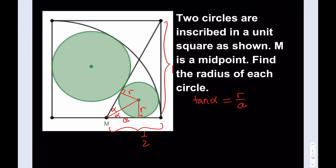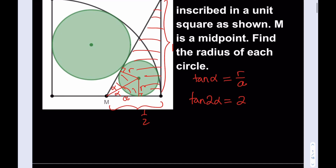I can double alpha and write tangent 2-alpha. That belongs to a right triangle we know of, so tangent 2-alpha is going to be 1 over one-half, which is 2. So now I know that alpha and 2-alpha are both acute angles, and from tangent 2-alpha I can find tangent alpha easily.